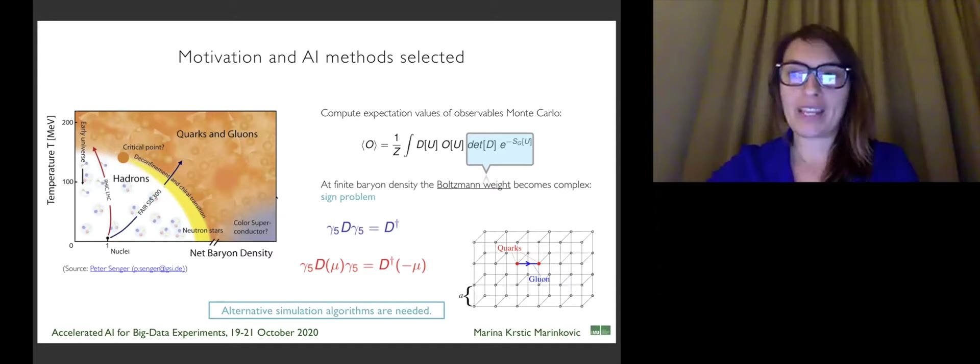This so-called sign problem is the reason why we are not yet able to determine with sufficient precision the full phase diagram of QCD. At strong couplings in QCD at zero baryon densities, we are able to obtain precise results by discretizing space-time with a discrete lattice. This approach is known as Lattice QCD. However, when trying to get predictions at finite densities, the Boltzmann weight becomes complex, and this is where Monte Carlo techniques fail.